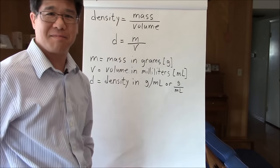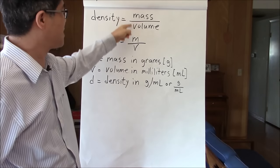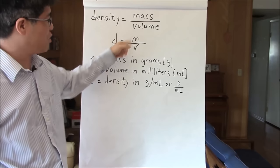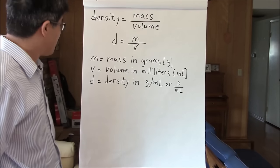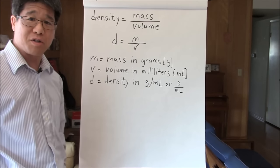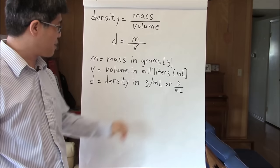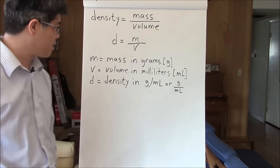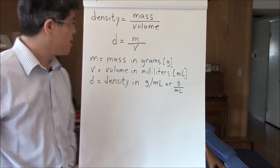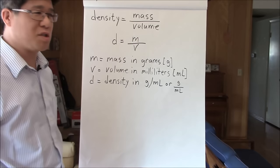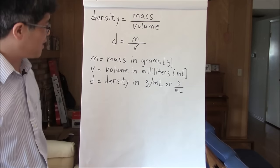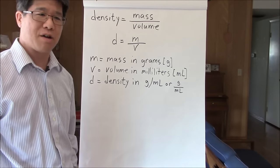The ratio of mass to volume is called density. Density is mass divided by volume, expressed as D = m/v. Mass (m) is measured in grams, volume (v) is measured in milliliters or cubic centimeters, and density (d) is in grams per milliliter. Density tells you how much mass is crammed into a certain amount of space.